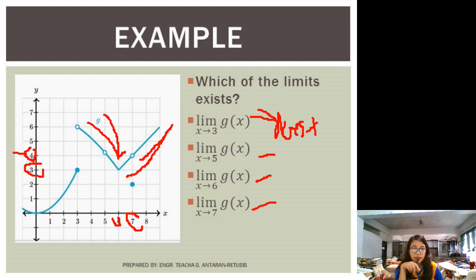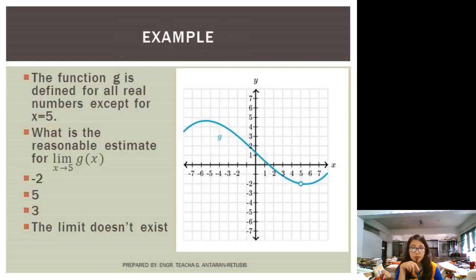Now, another example. Another example is this one. Okay. We are given here a function of g, or g of x, where g is defined for all real numbers except for x is equal to 5. Because as you can see, class, the graph,